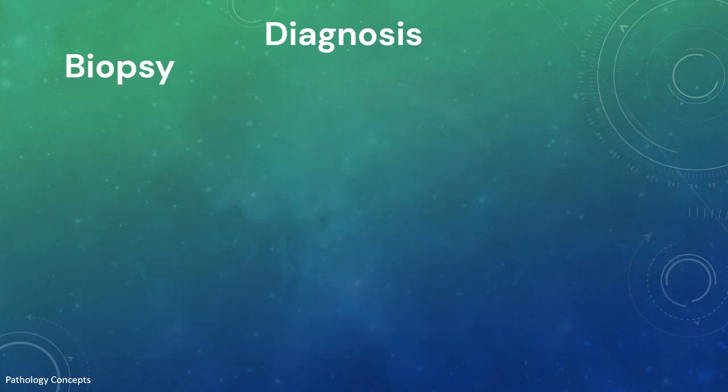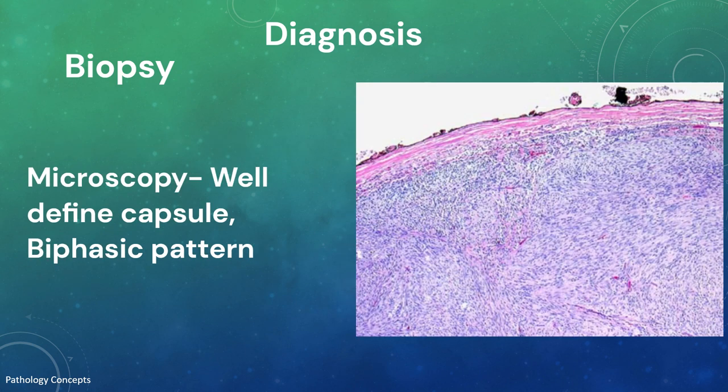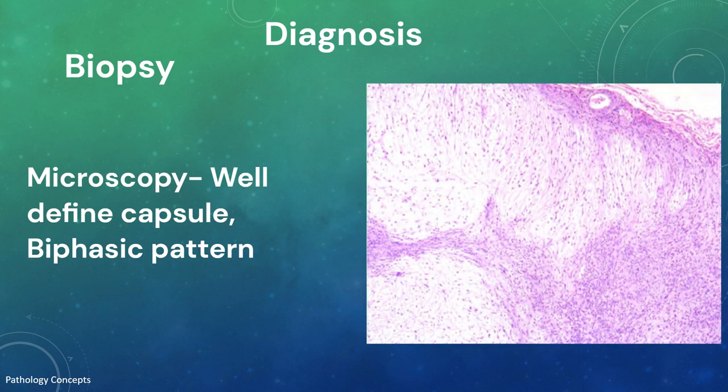Confirmatory diagnosis is mostly done on biopsy. Grossly, it presents as a solitary mass with epineurium encapsulation, frequently with overlying vessels. The cut surface is pink or white. In very large masses, degenerative cysts, hemorrhages, or dystrophic calcification may be present. It has a well-defined fibrous capsule.